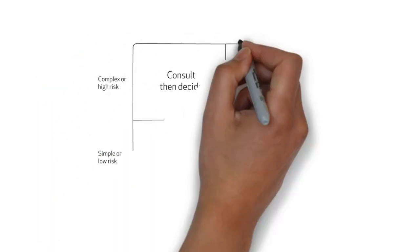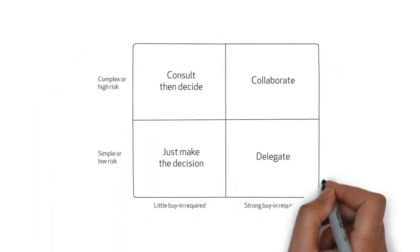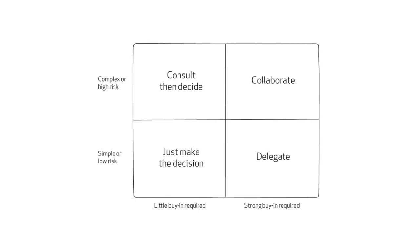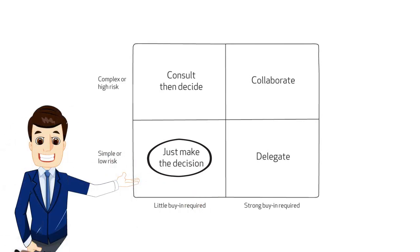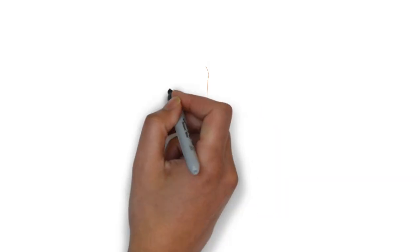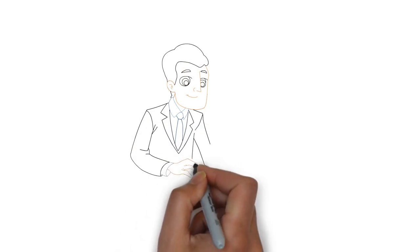A simple two-by-two matrix can also be helpful here. The first step is to identify the easy decisions. Those that are simple or low risk and require little buy-in or support. These decisions have little ramifications if they're wrong and it doesn't matter if people agree. So just make them and move on.